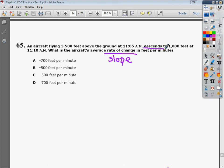If we're measuring rate of change in terms of feet above the ground, so altitude, obviously if they're descending they're going down. So we can eliminate C and D immediately because they say they're going up 500 feet per minute or 700 feet per minute. It's obviously A or B.